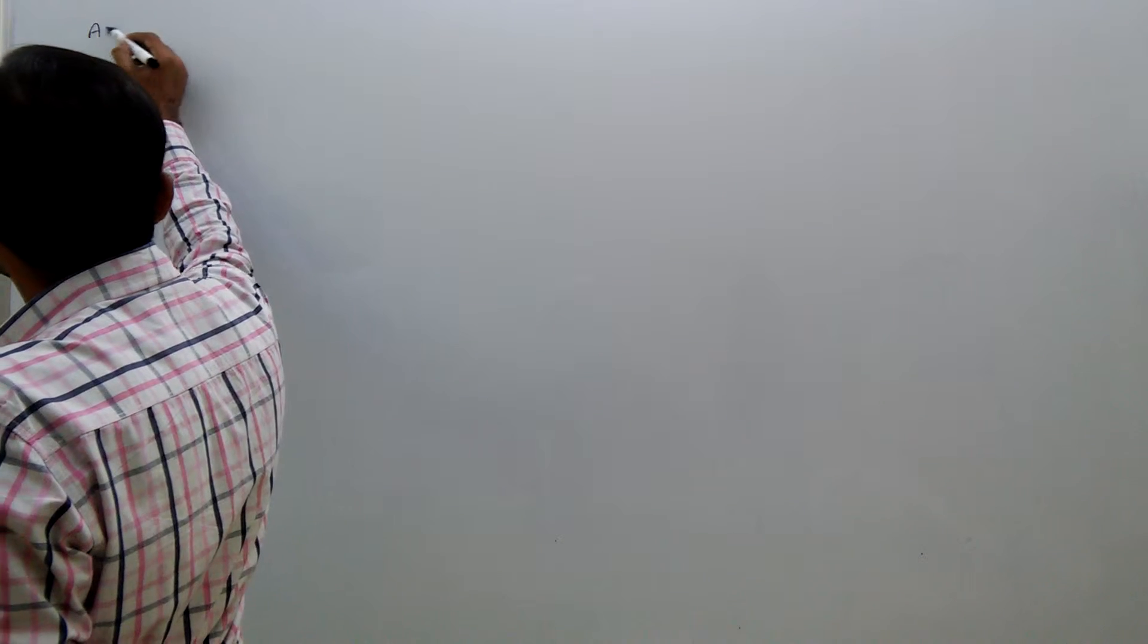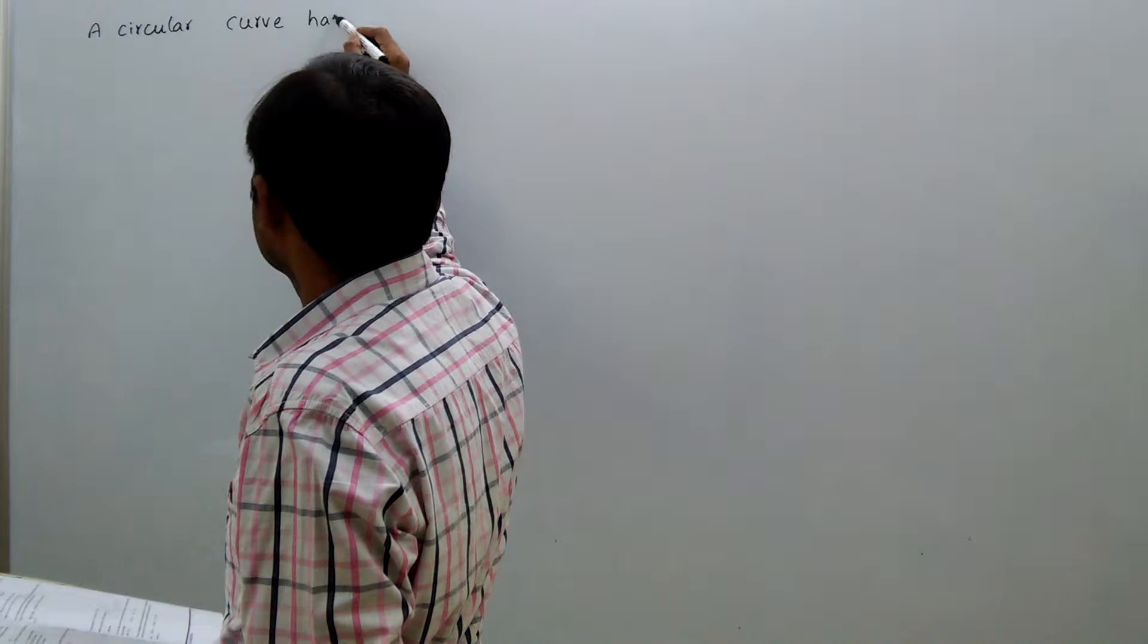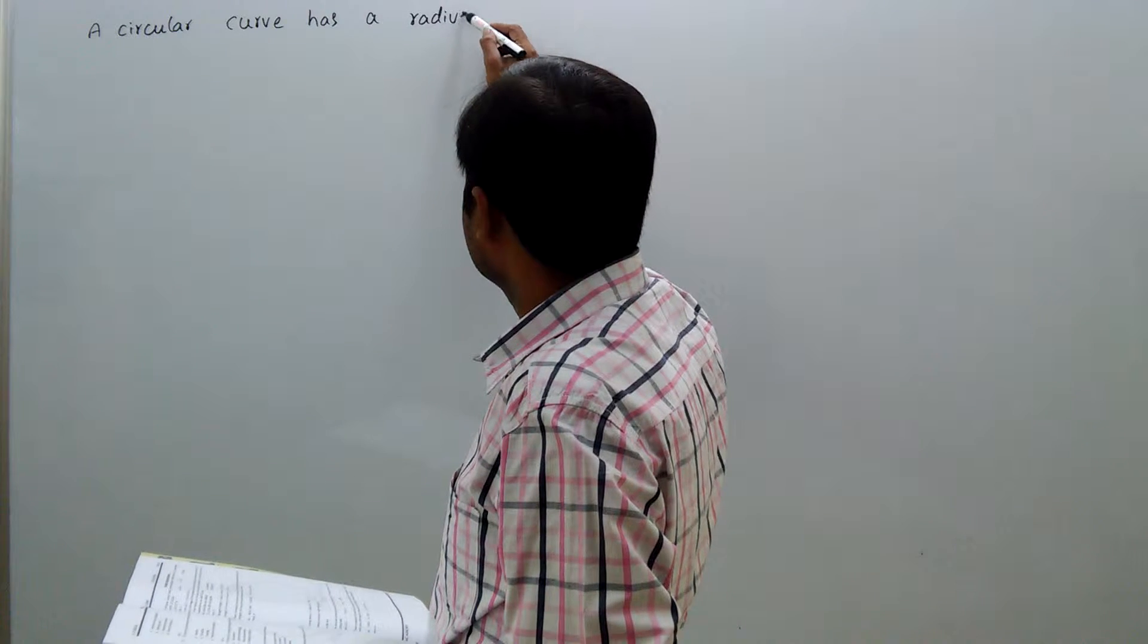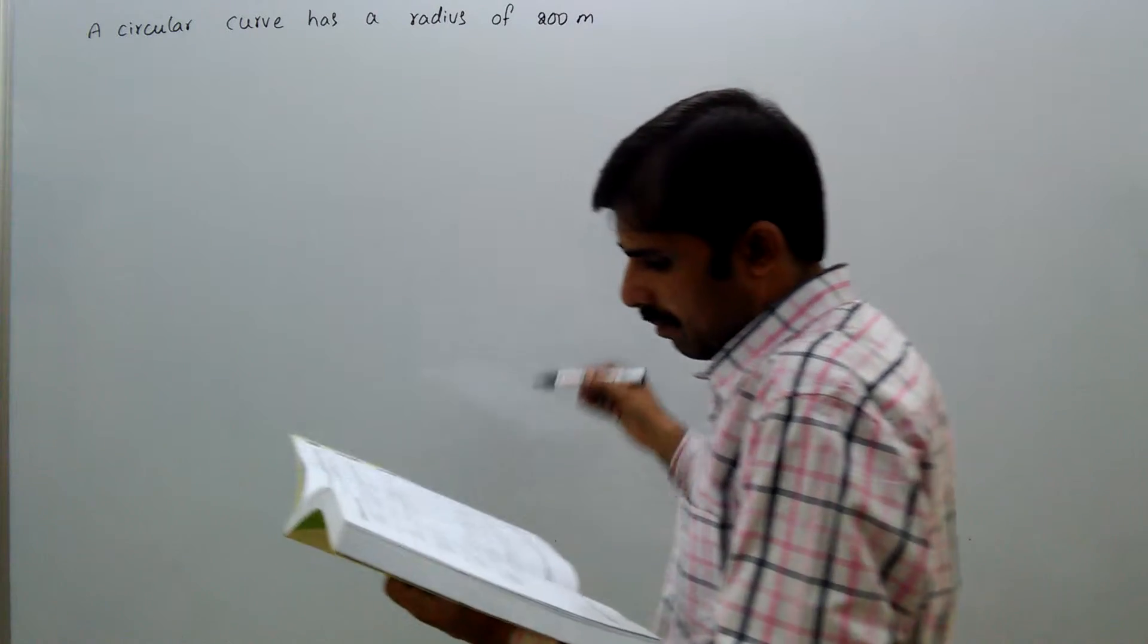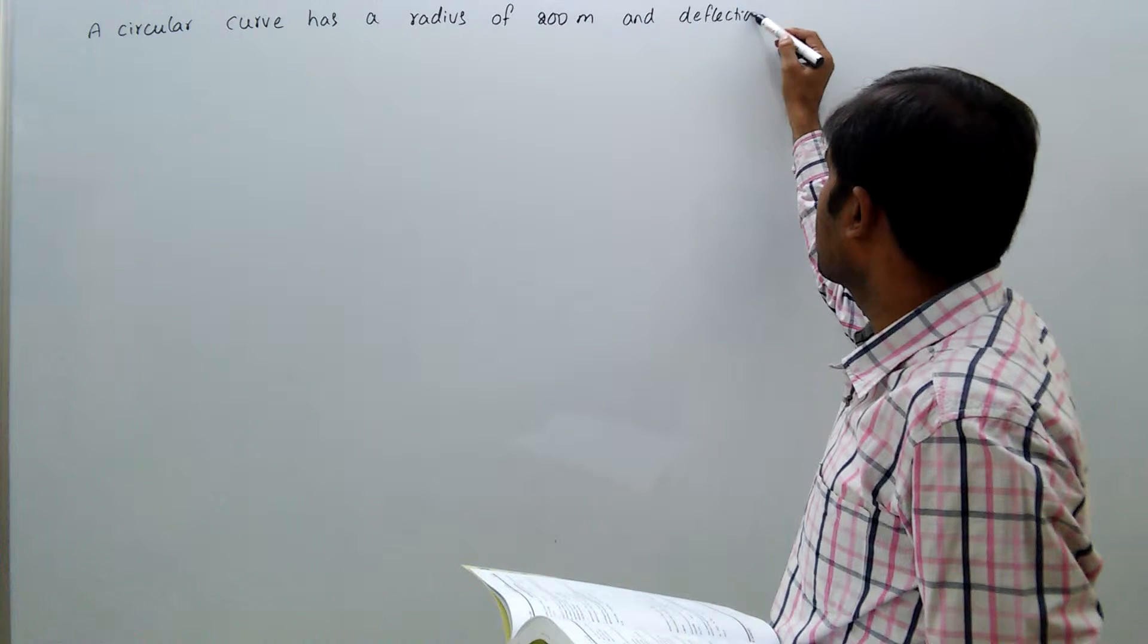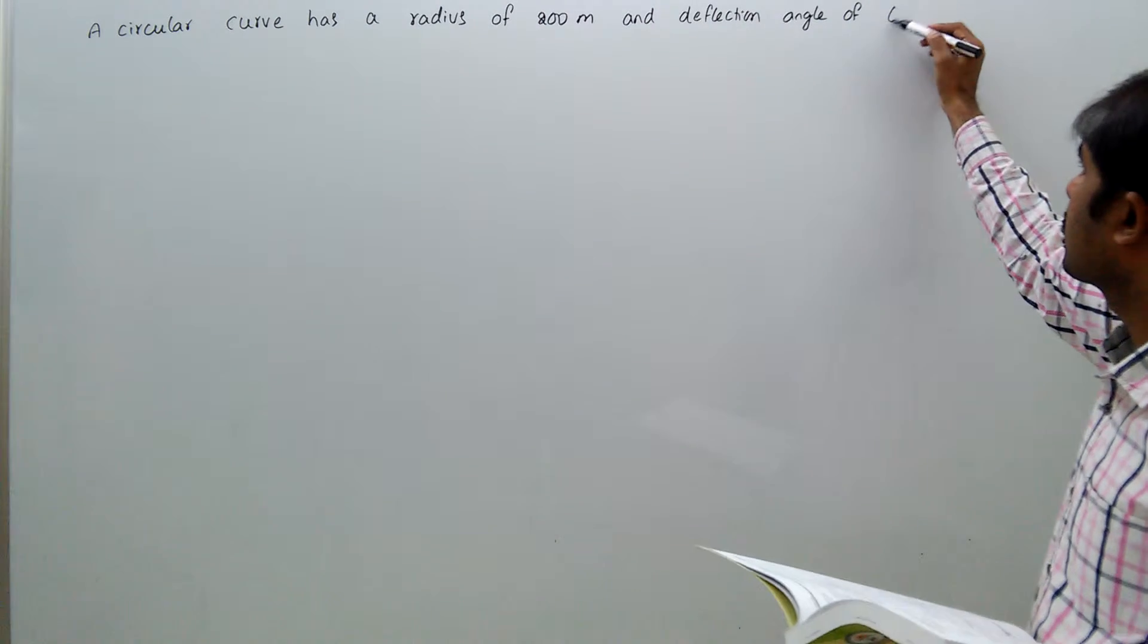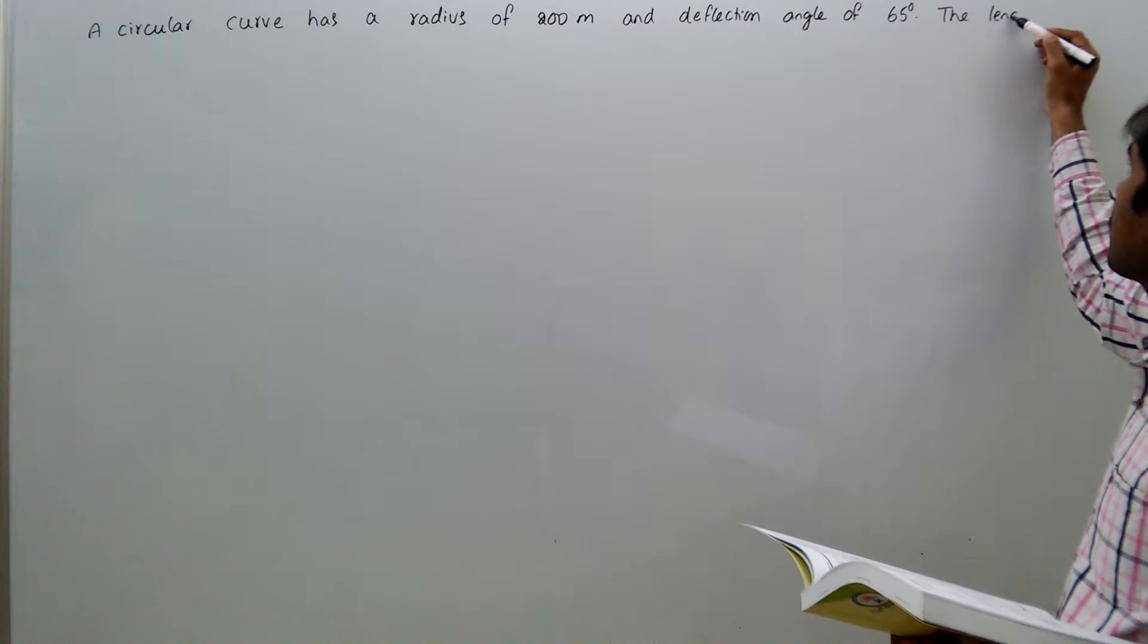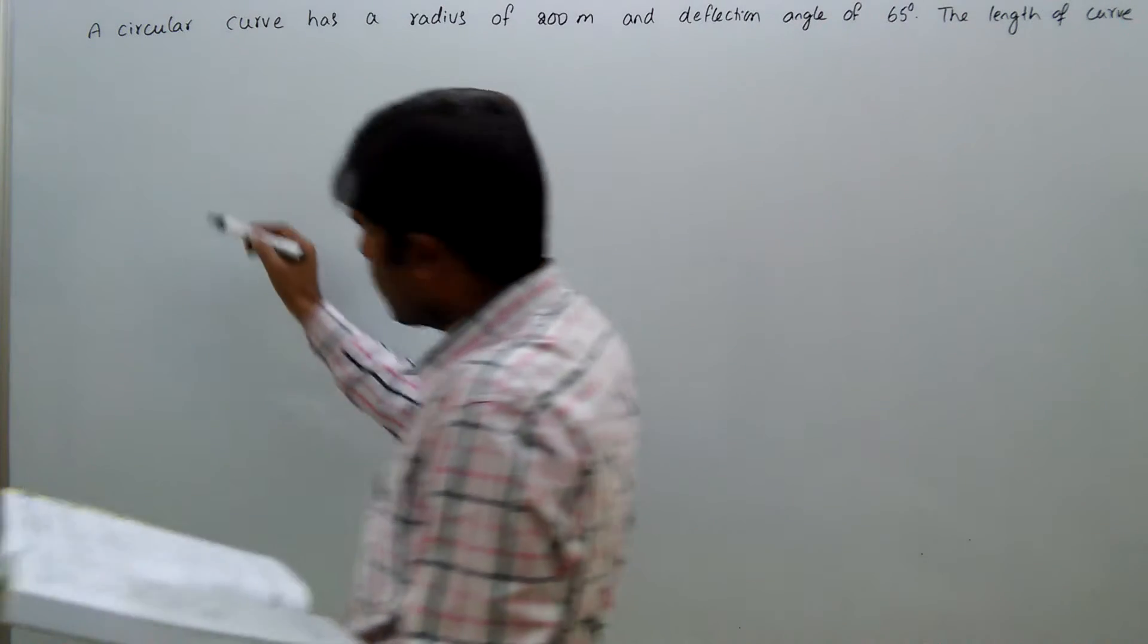A circular curve has a radius of 200 meters and deflection angle of 65 degrees. The length of curve in meters is